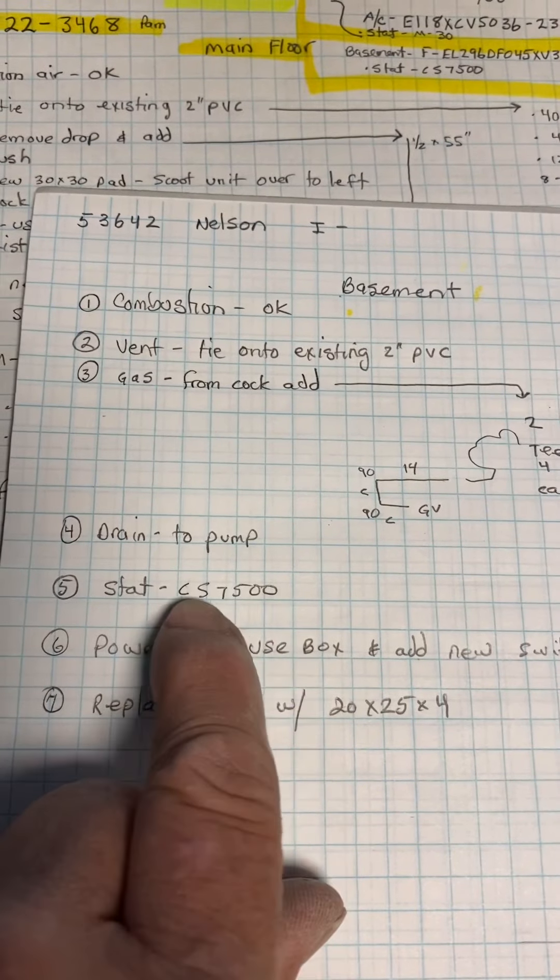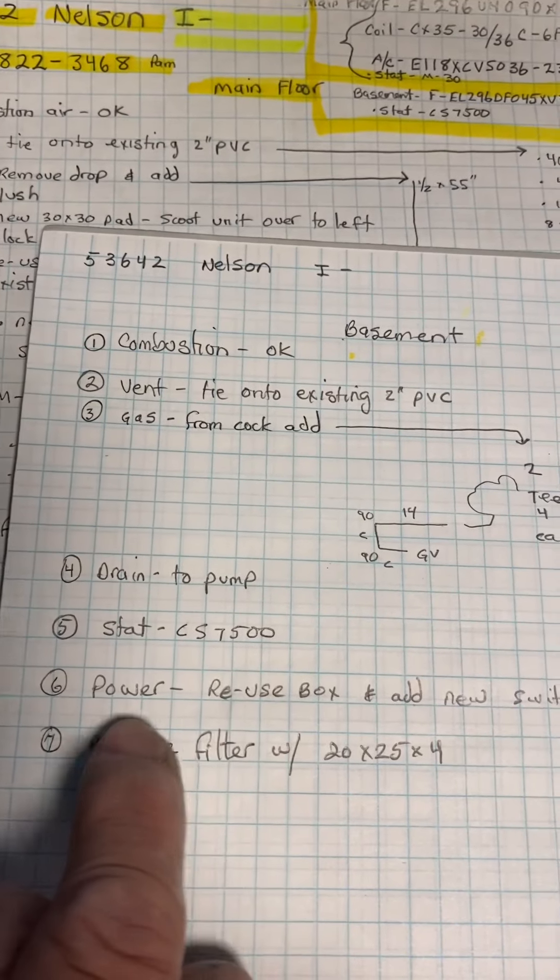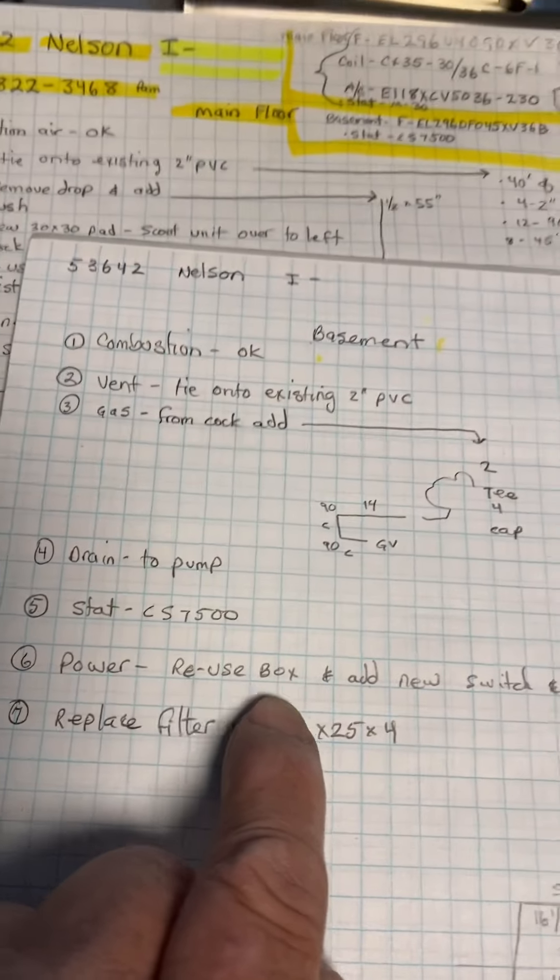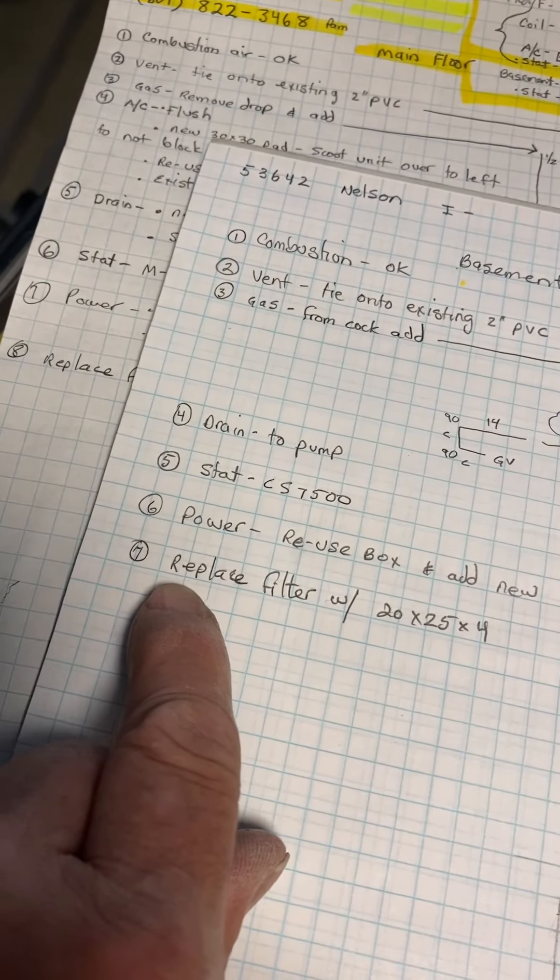Power, reuse the box, add new switching cover. Replace the filter in the box with 20 by 25 by 4.